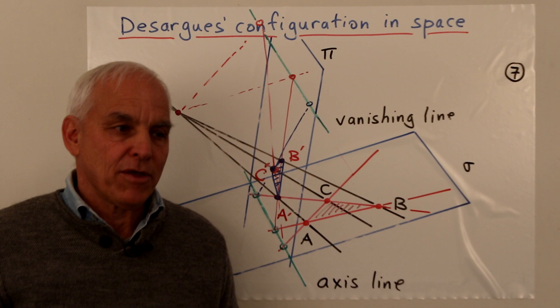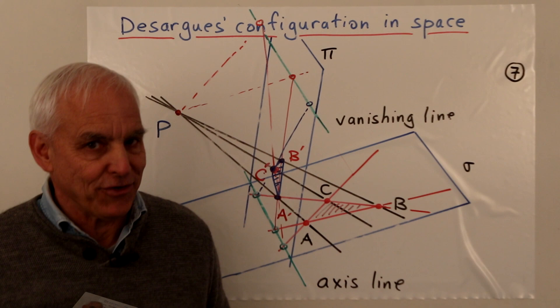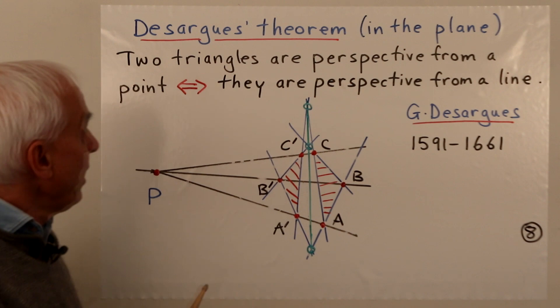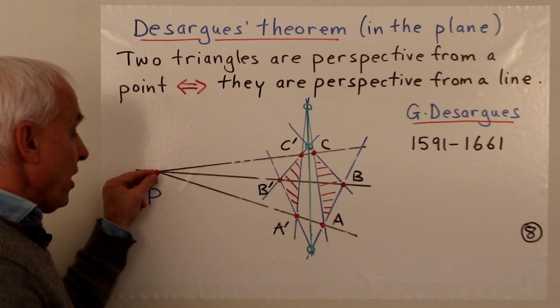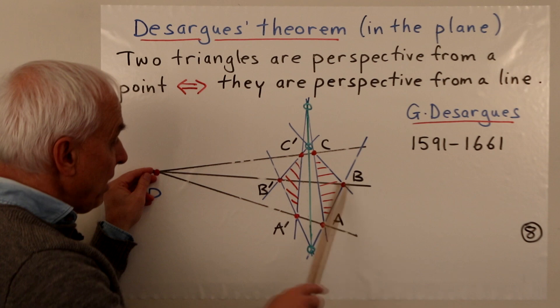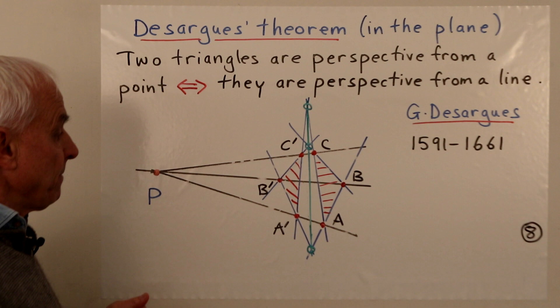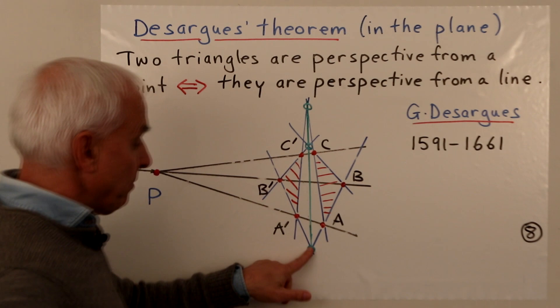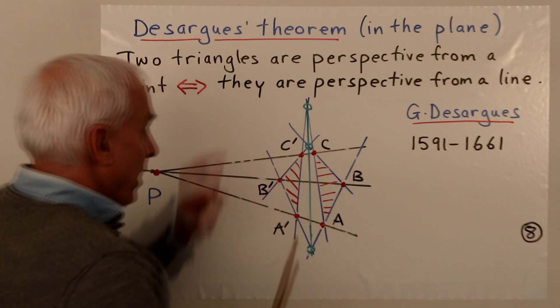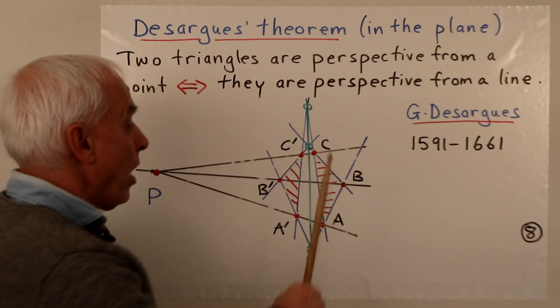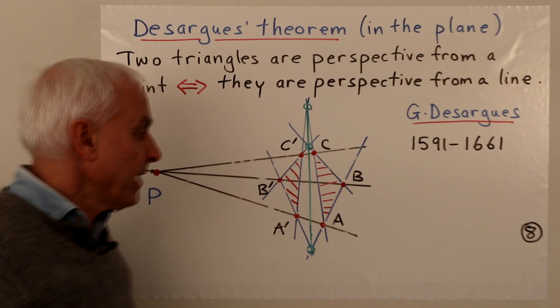This theorem is not primarily in three dimensions — it's actually a theorem in two dimensions. Here is Desargues's theorem in the plane: two triangles are perspective from a point precisely when they are perspective from a line. Triangle ABC and triangle A'B'C' are perspective from point P because A and A', B and B', C and C' are each collinear with P. The result is that AB and A'B' meet at a point, BC and B'C' meet at a point, AC and A'C' meet at a point, and these three intersection points are themselves collinear.